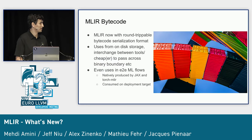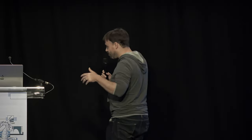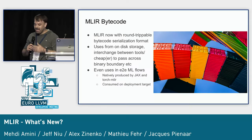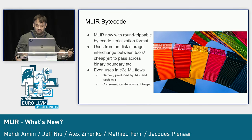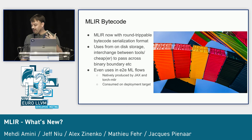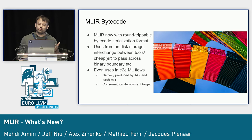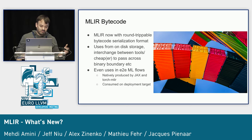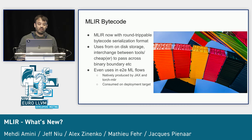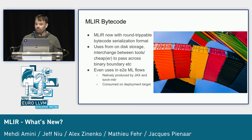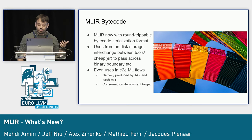Moving on to serialization — MLIR now has a round-trippable bytecode serialization format. This enables use cases like storage, interchange between tools, and cheaper passing across binary boundaries. ML frameworks such as JAX and Torch-MLIR now natively produce MLIR bytecode, and some deployment targets are able to consume it as well.